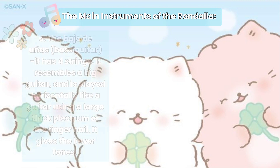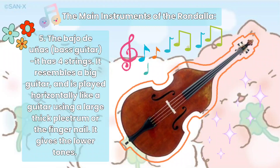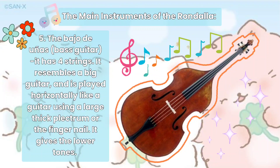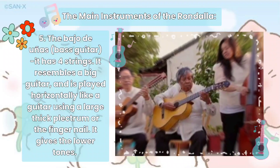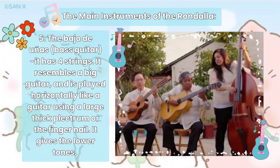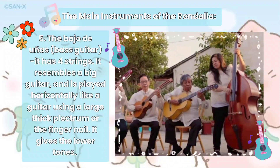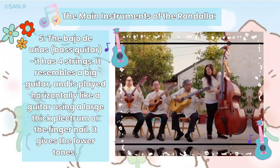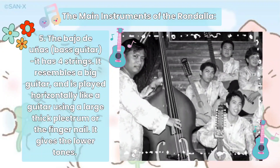And the last one is the Bajo de Uñas or Bass Guitar. It has four strings. It resembles a big guitar and is played horizontally like a guitar using a large thick plectrum or the fingernail. It gives the lower tones.